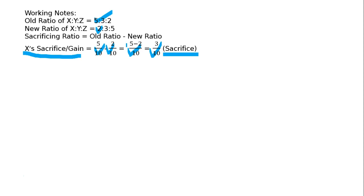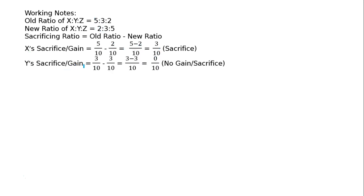For Y's sacrifice or gain: old ratio is 3/10 and new ratio is 3/10. So 3 minus 3 by 10 equals 0 by 10. There is no sacrifice or gain for Y.